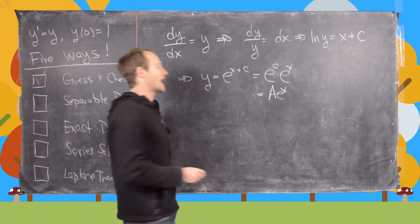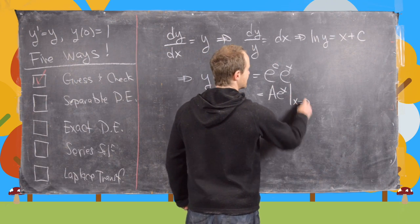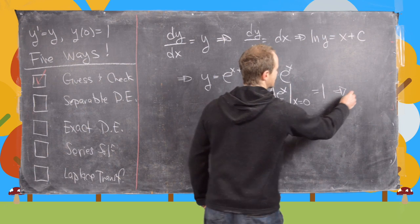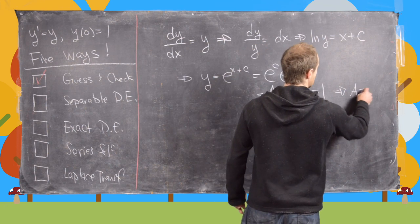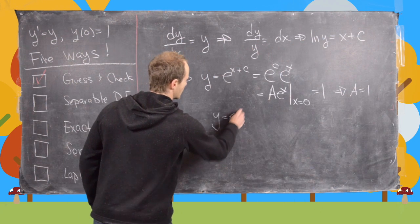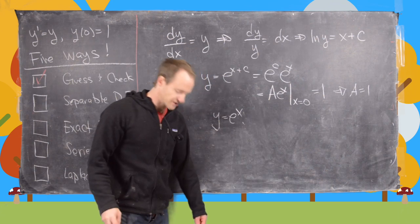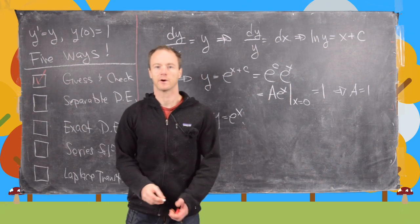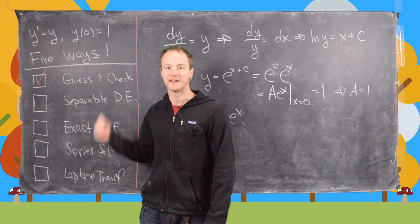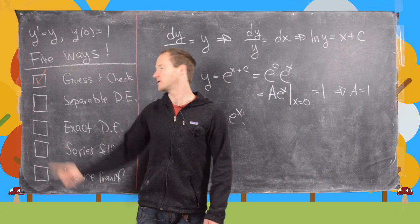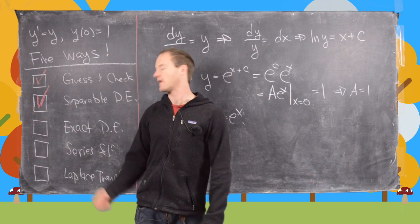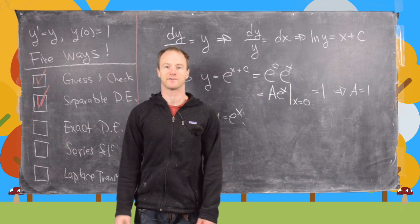Evaluating at x equals 0, we should get 1, which tells us that a equals 1, and finally we see that y equals e to the x, just like before. So we've now solved this as a separable differential equation, and we're ready to move on to look at it as an exact differential equation.